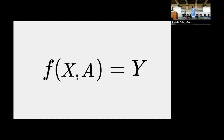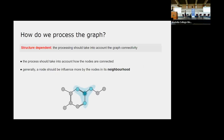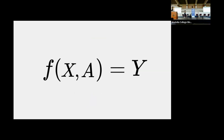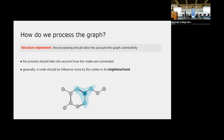The most important part is how we actually process the graph. We can construct many functions taking into account the feature matrix and adjacency matrix, but a useful function should fulfill some properties. The most important is that it needs to take into account the structure — the assumption is that the representation of a node should be more influenced by nearby neighbors and less by nodes that are far away, encoding connectivity.